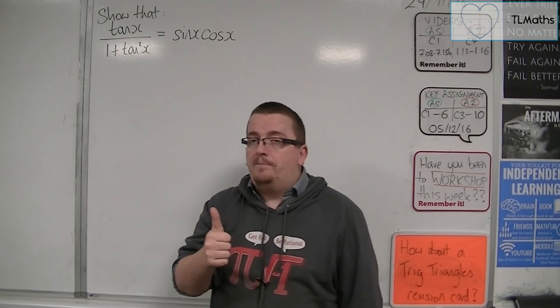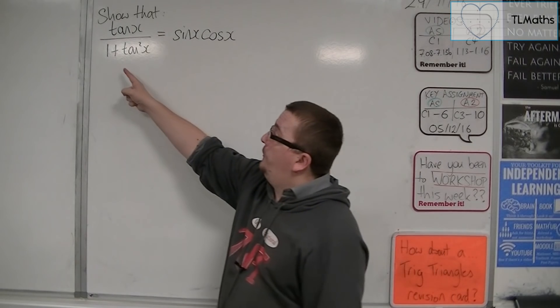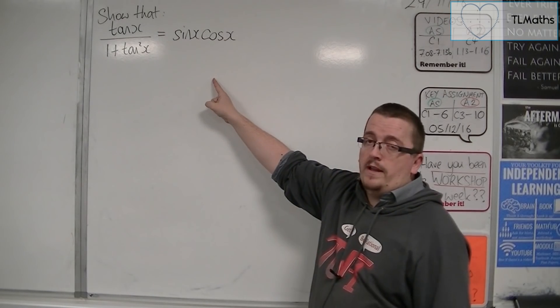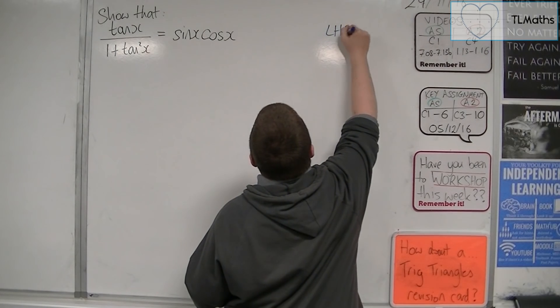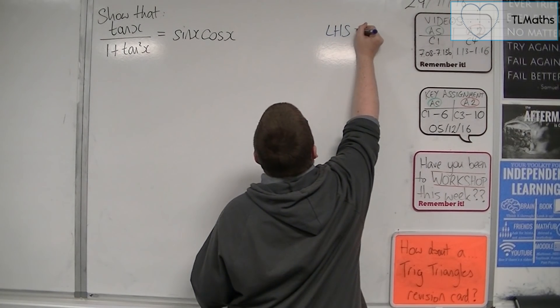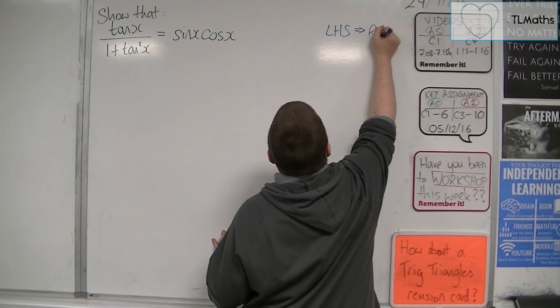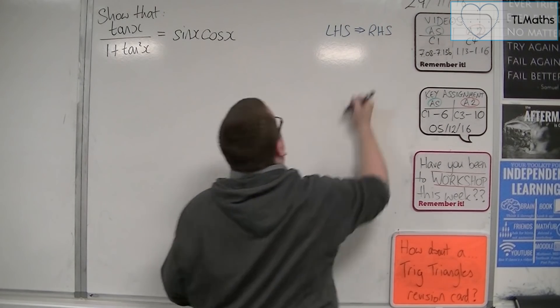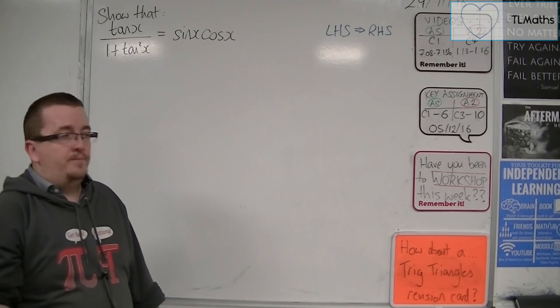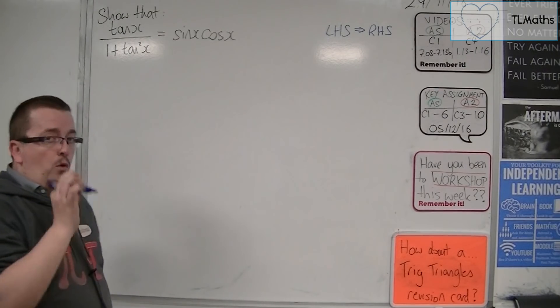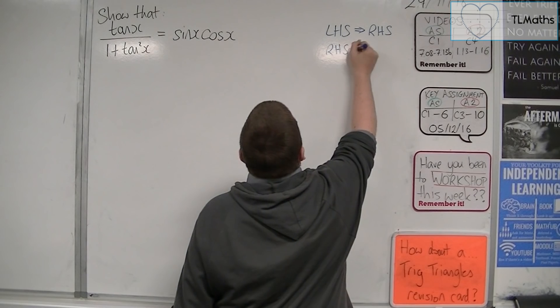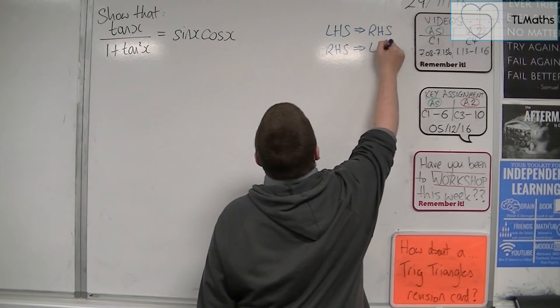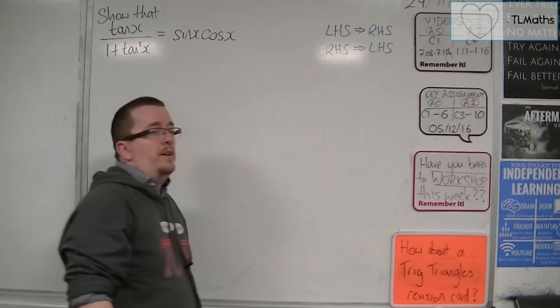The first way is to show that the left-hand side is equal to the right-hand side. So, what I'm saying there is you start with the left-hand side, and through a logical deduction, you show that you can get to the right-hand side. Or, you start with the right-hand side, and by logical deduction, get yourself to the left-hand side.